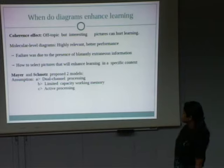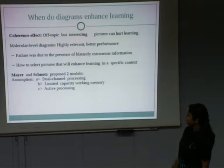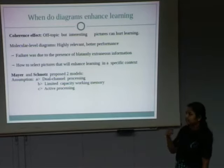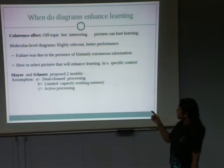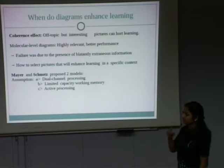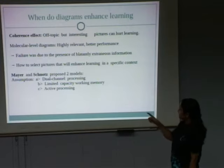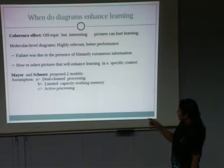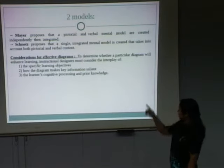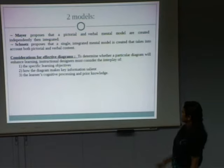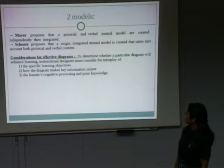The question is how to select pictures and determine whether a diagram will help improve learning gain. Mayer and Sknolls propose two models based on assumptions of dual channel processing, limited capacity working memory, and active processing. In dual channel processing, visual information and verbal information follow separate paths — from eye to brain and from ear to brain. However, limited capacity means only one thing can be processed at a time. Mayer proposes that pictorial and verbal mental models are created independently and then integrated, while Sknolls proposes that a single integrated mental model is created incorporating both pictorial and verbal content.